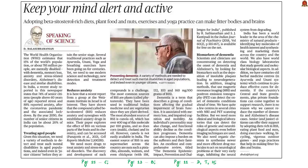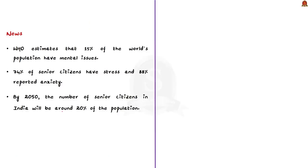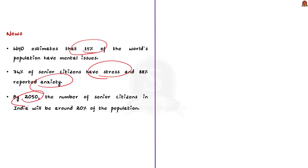The next article highlights that according to WHO, 15% of the world's population have mental health issues. In India, 74% of senior citizens have stress and 88% of Indians have reported anxiety. By 2050, senior citizens will comprise around 20% of India's population, making treatment of elderly conditions like dementia and Alzheimer very challenging. In this context, let us discuss Alzheimer's, dementia, their diagnosis and treatment.